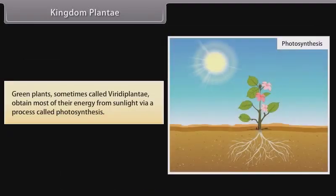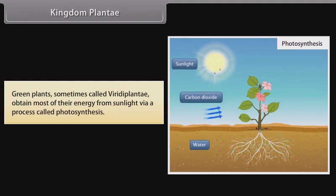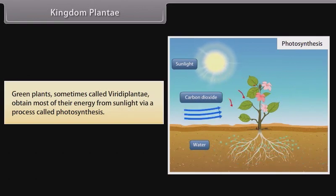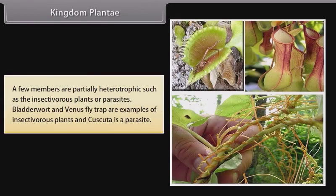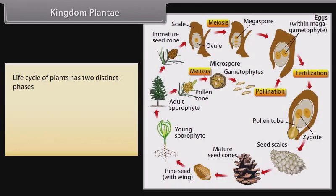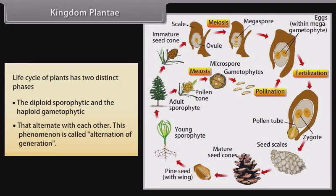Green plants, sometimes called Viridiplantae, obtain most of their energy from sunlight via a process called photosynthesis. A few members are partially heterotrophic, such as insectivorous plants or parasites. Bladderwort and Venus flytrap are examples of insectivorous plants, and Cuscuta is a parasite. The life cycle of plants has two distinct phases — the diploid sporophytic and haploid gametophytic — that alternate with each other. This phenomenon is called alternation of generations.